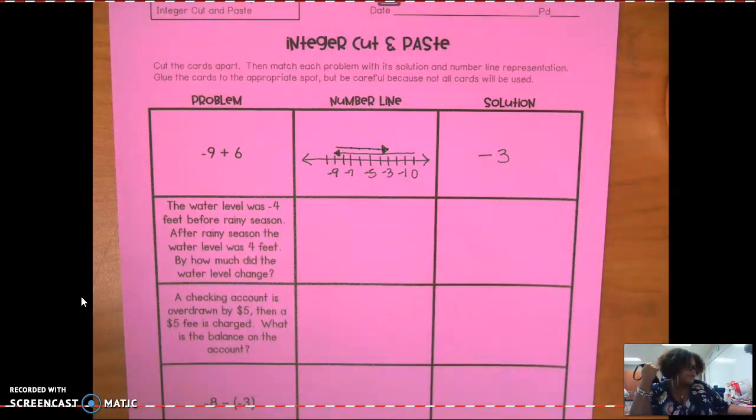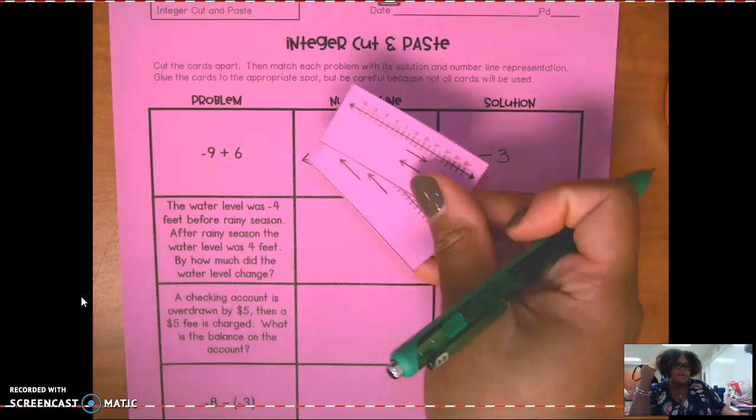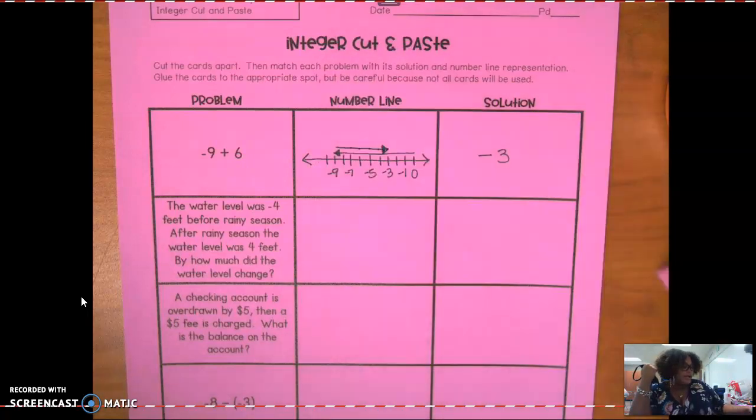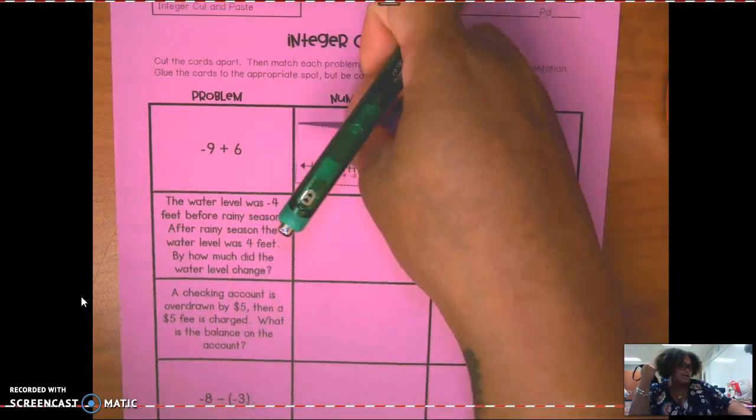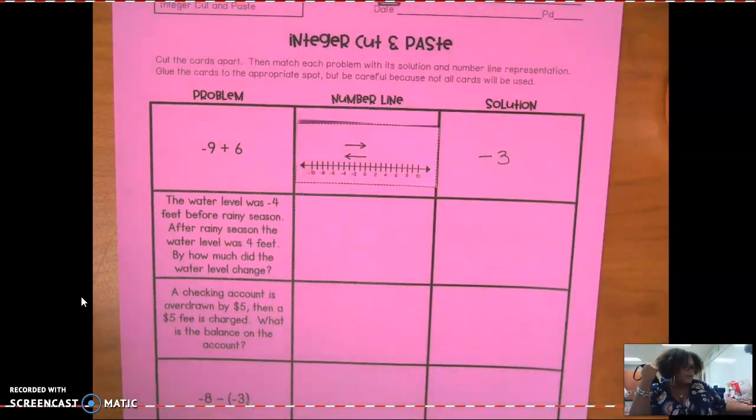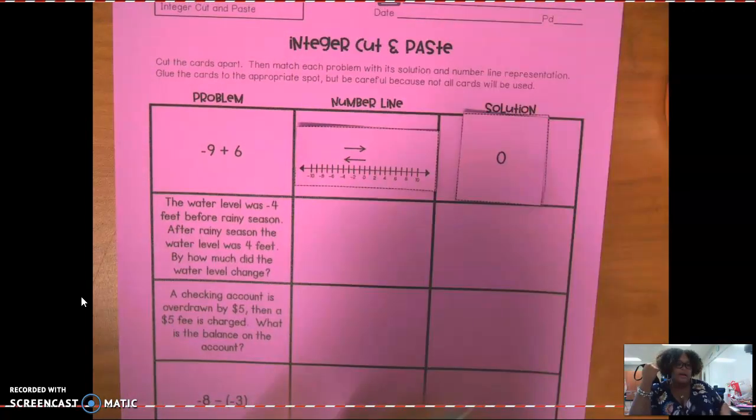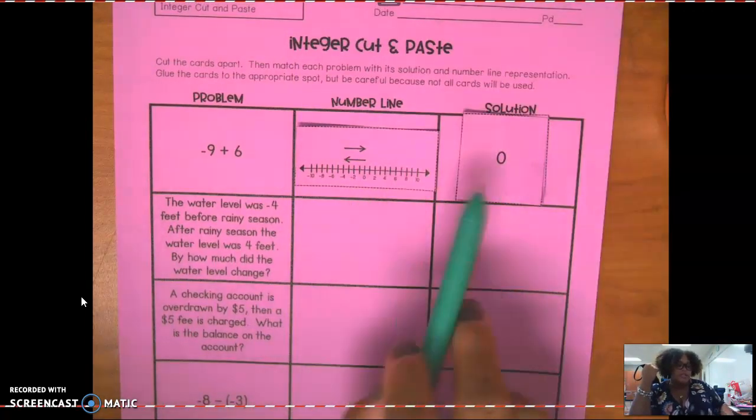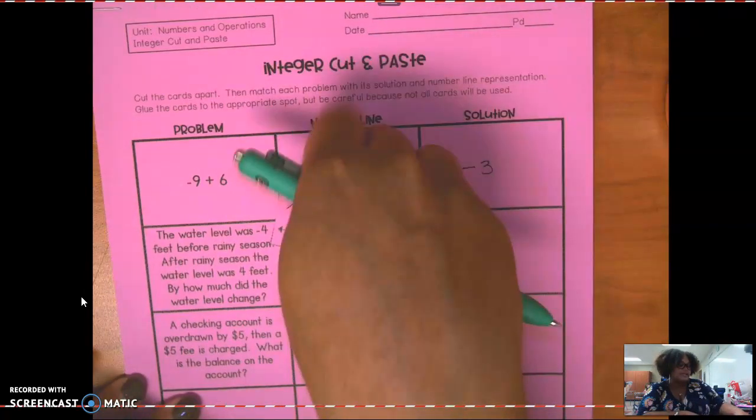The number line that you choose from here, from your cutouts, will get glued here. And then the negative three will get glued here. Now I know these don't represent what we just drew, but that's what you're supposed to do when you work these out.